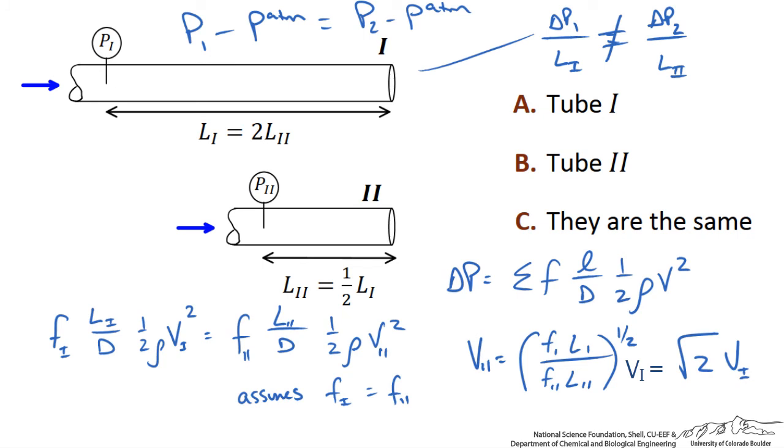So, we see that V2 in the shorter tube is going to be larger, and this actually is larger than what we have written as the square root of 2, because the frictional factors will also be slightly different. So, answer B is correct. Choose the shorter hose.